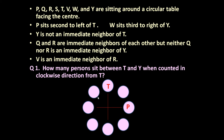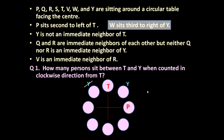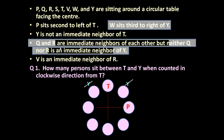W sits third to the right of Y, but where is Y — we don't know. So let us highlight this. Y is not an immediate neighbor of T, which means Y cannot occupy these two positions adjacent to T. Q and R are immediate neighbors of each other, but neither Q nor R is an immediate neighbor of Y — but where is Y, we don't know. So let us highlight this and see it afterwards.